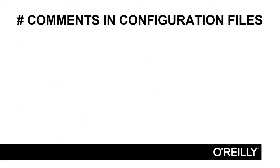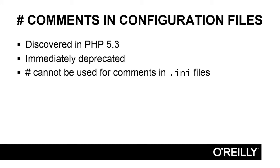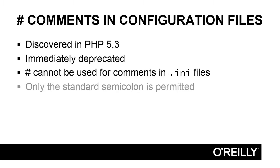Another change regards the use of the hash or pound sign for comments in configuration files. This came to light in PHP 5.3, but it was immediately deprecated. It's now official that you can't use a hash or pound sign to comment out a line in an INI file. Only the standard semicolon is permitted for comments in configuration files.